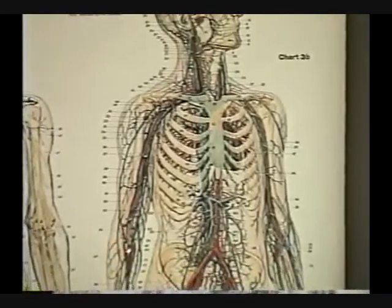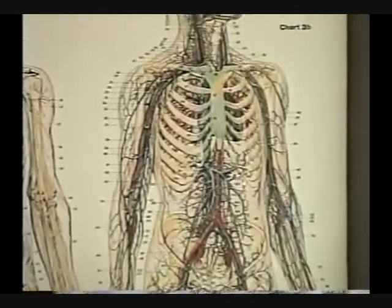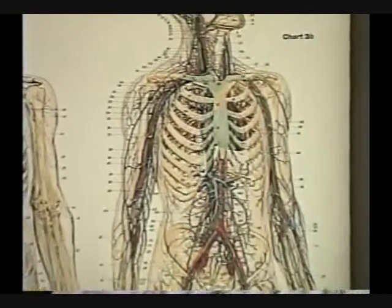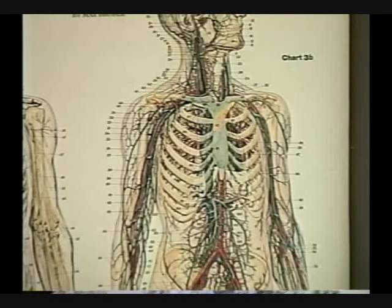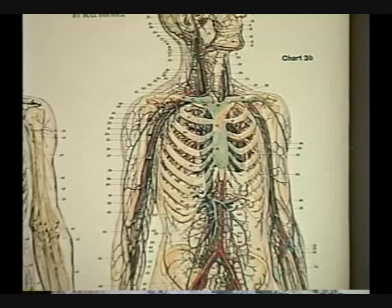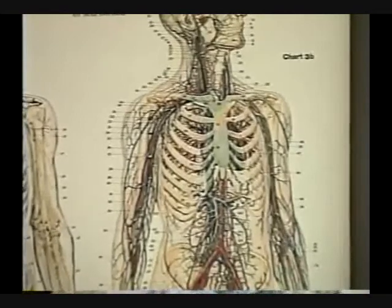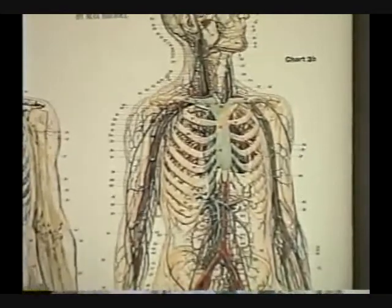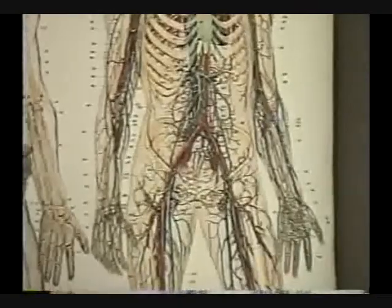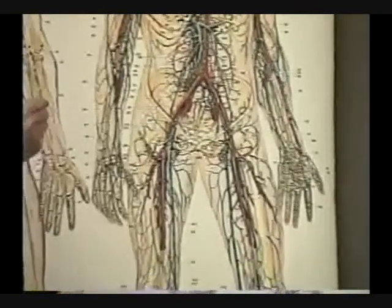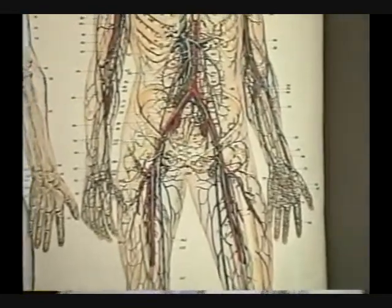The brachial bifurcates at the elbow — we can see it better on the other side. It splits into the radial, going down the thumb side, and the ulnar, going down the pinky side. Most of the veins large enough to identify on this chart are paralleling the same arteries.